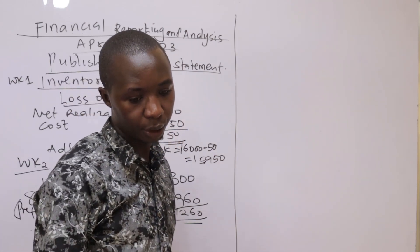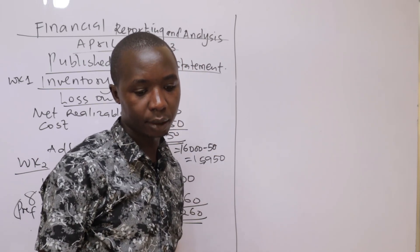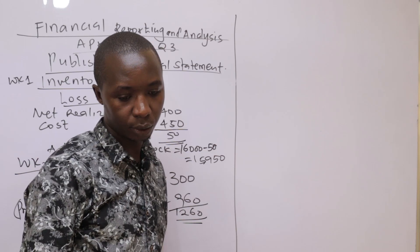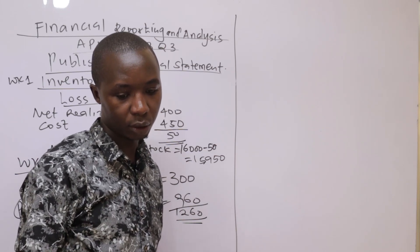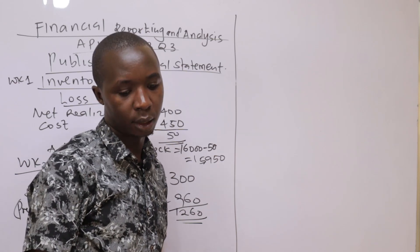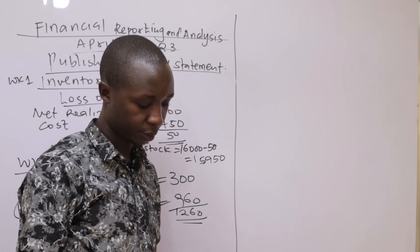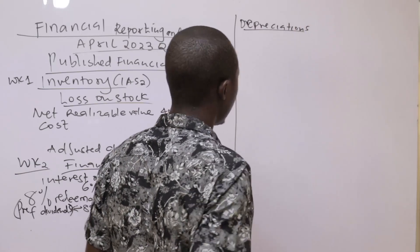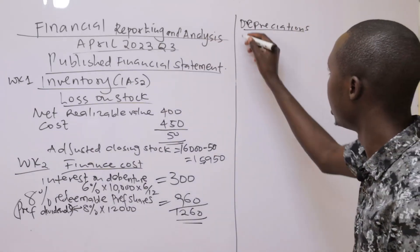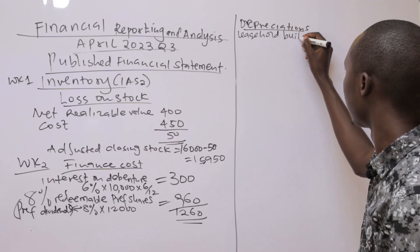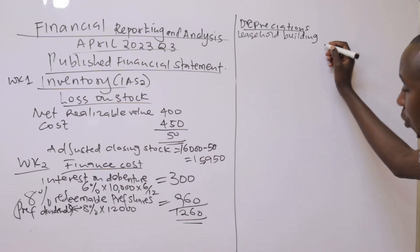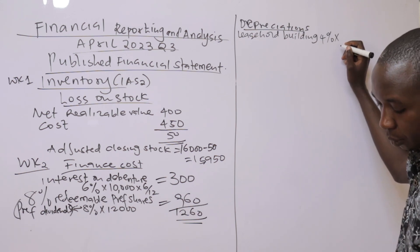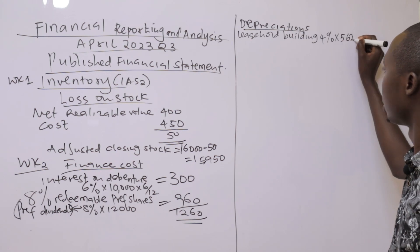Additional information number three: the policy of the company in relation to depreciation of each asset is as follows — freehold building 4% on a straight-line basis, plant and equipment 20% on a straight-line basis, furniture and fittings 4% on reducing balance. Our depreciation: starting from freehold building — 4% straight-line on the cost in the trial balance, which is 56,250.